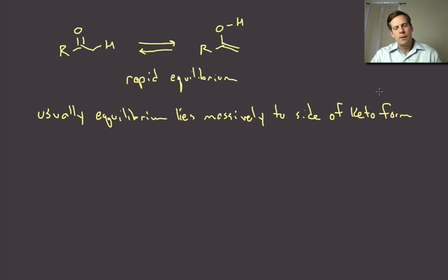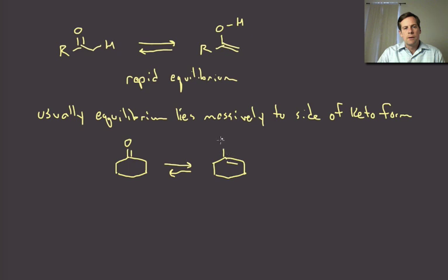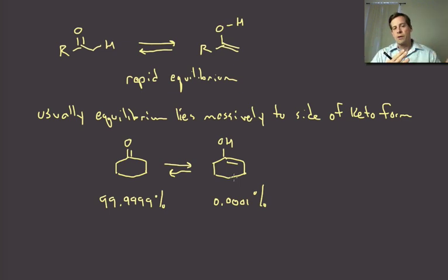For the vast majority of carbonyls, at least simple carbonyls, you're going to see almost exclusively the keto form. I'll give you one example. If we look at cyclohexanone there absolutely is an equilibrium here between the keto and the enol forms. This can be measured and the keto form is 99.9999 percent, whereas the enol form is almost negligible in this mixture.